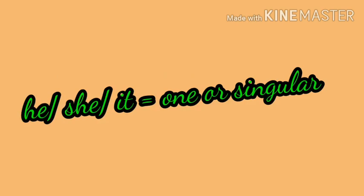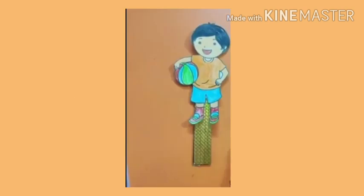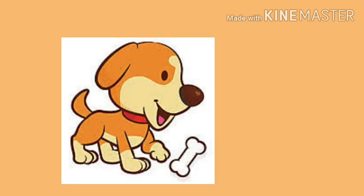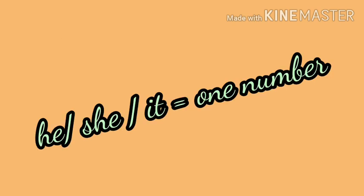I-T, it. But remember one thing very clearly, children: he, she, and it — every time they will be used with singular number. Singular means whenever there will be one. It can be one boy, one girl, or one animal. Whenever the number is one, we will use he, she, or it. And we now know when we can use he, when we can use she, and when we can use it.